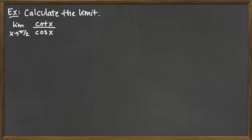In this example, we're going to be looking at the function that involves a couple of trig functions: cotangent of X over cosine of X. We're going to be looking at the limit as X goes to π/2.